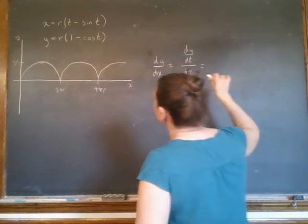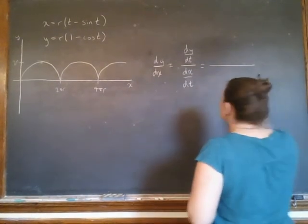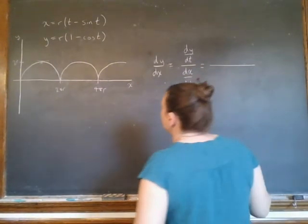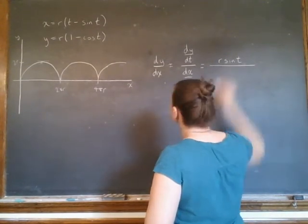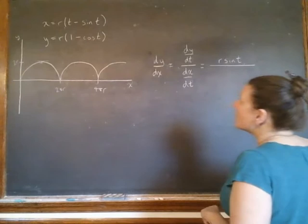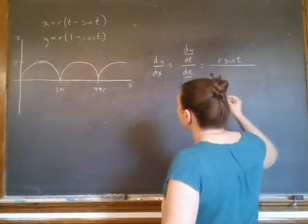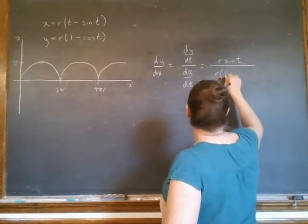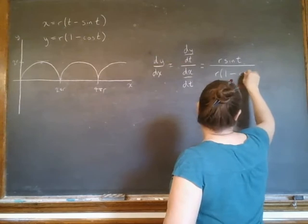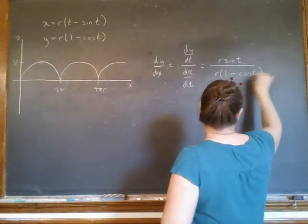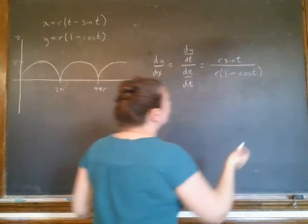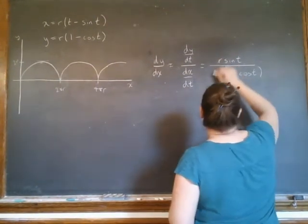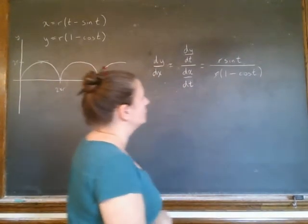So if I look at my equations and just take the derivative, the derivative of cosine is negative sine, so you're going to have r sine t there, where the derivative of 1 is 0, and then on the bottom I'm going to have r times 1 minus cosine t. Basically those are going to cancel out, and what we end up with is just sine t over 1 minus cosine t.